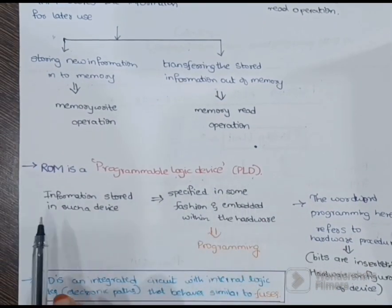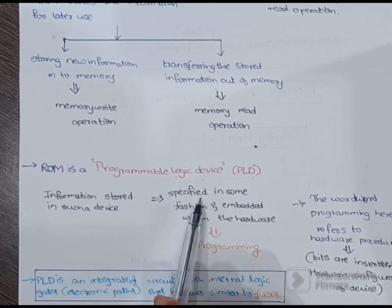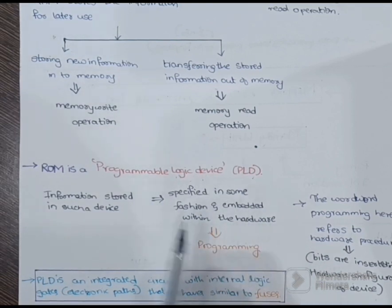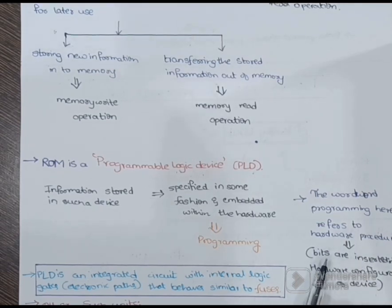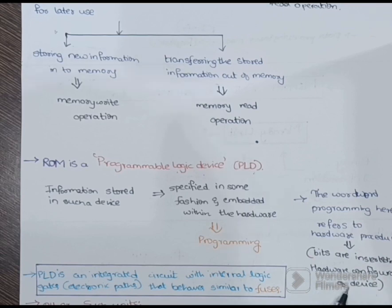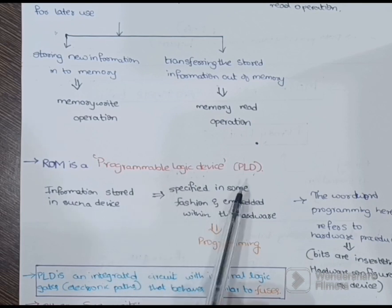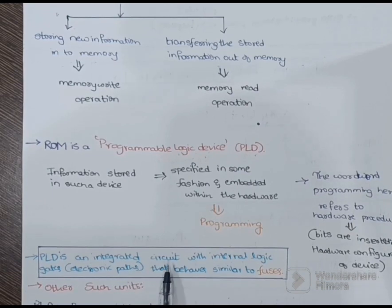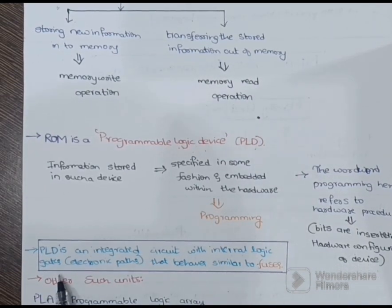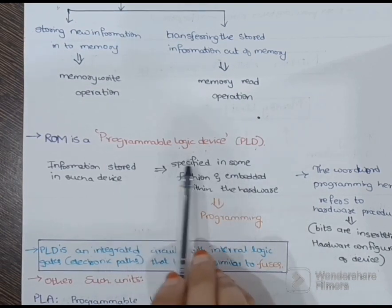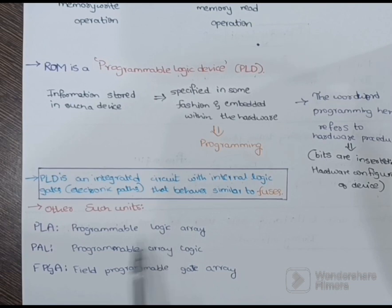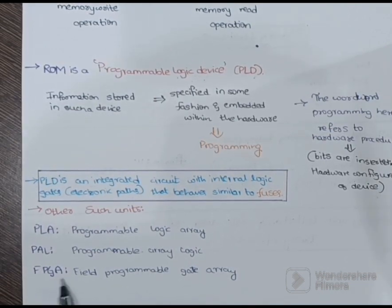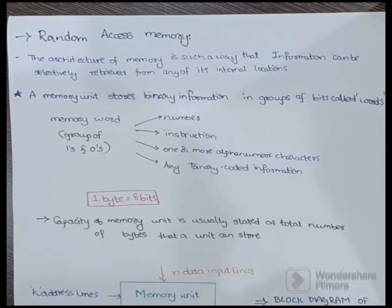ROM is a programmable logic device. It is a hardware procedure in which bits are inserted into the hardware configuration of the device. ROM is one example of a PLD — Programmable Logic Device. A PLD is an integrated circuit that has internal logic gates connected through an electronic path, behaving similar to fuses. Other such units are PLA (Programmable Logic Array), PAL (Programmable Array Logic), and FPGA (Field Programmable Gate Array).